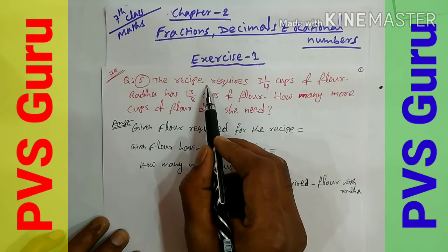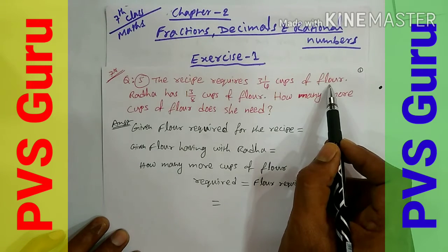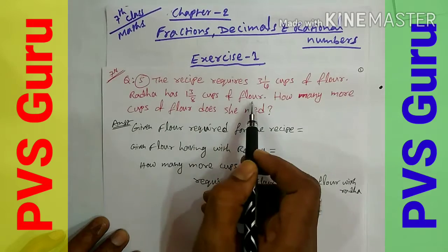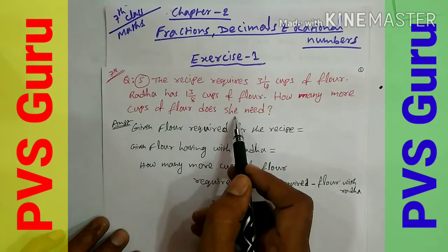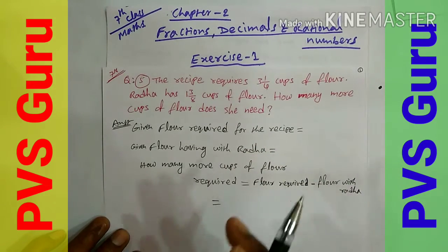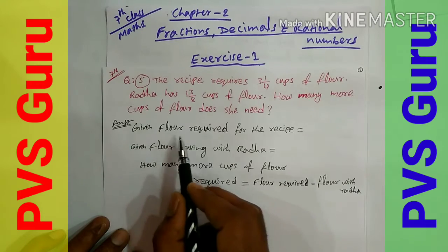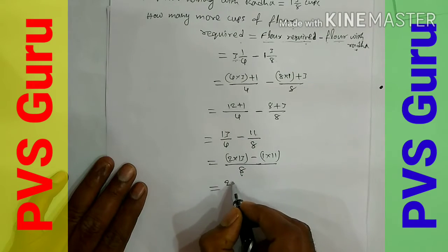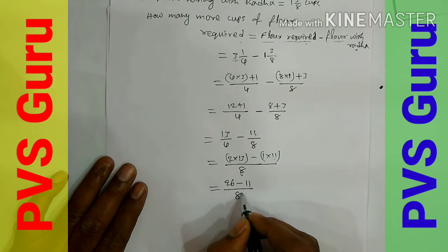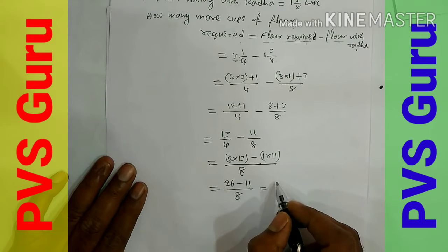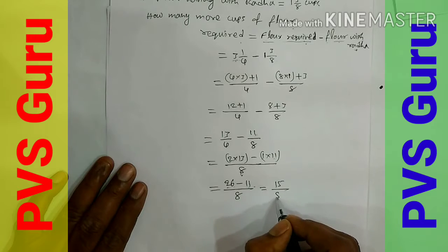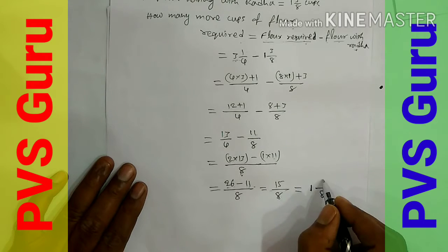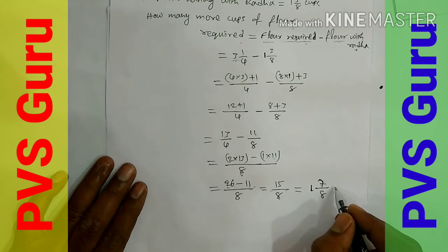Flour required for the recipe is 3 and 1/4 cups. We subtract: flour needed minus flour available, which is 26/8 minus 11/8. That gives us 15/8. Converting to mixed fraction: 8 goes into 15 once with remainder 7, so the answer is 1 and 7/8 cups are needed.